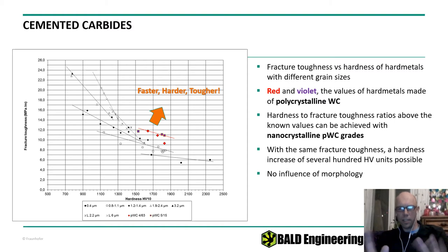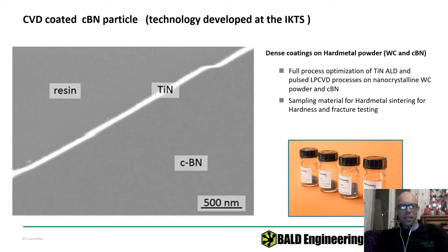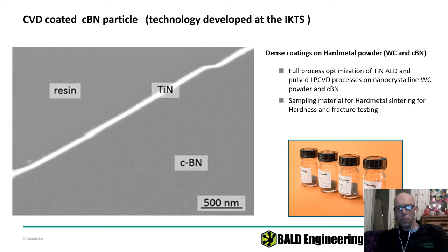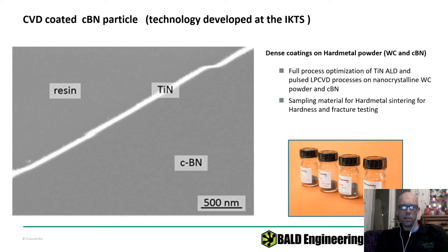I guess you're all hoping for ALD. Here's one example: cubic boron nitride powder that we have coated. Cubic boron nitride also has other applications — for example, as a polishing granulate molded into polishing discs. We also coated, just as an example, a beautiful titanium nitride coating on one of those grains.